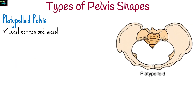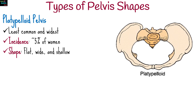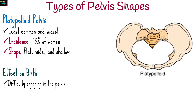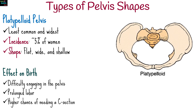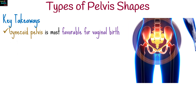Finally, the platypelloid pelvis. This is the least common pelvis type, occurring in only 5% of women. It is flat, wide, and shallow, making it difficult for the baby to engage properly in the birth canal. This often results in prolonged labor and a higher likelihood of a C-section.